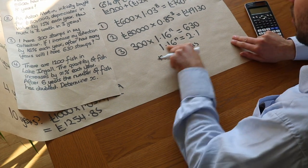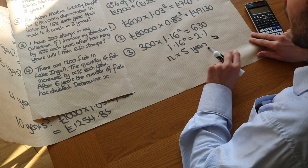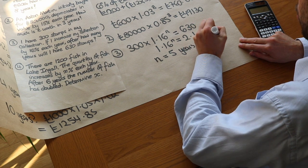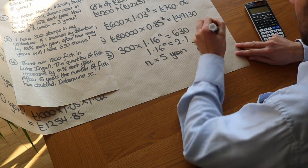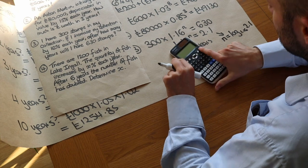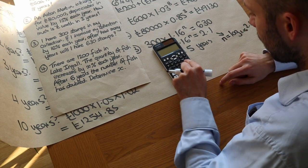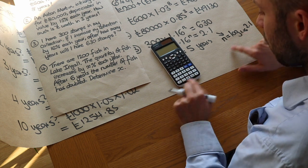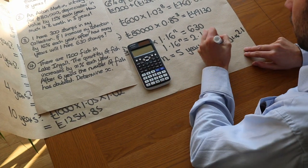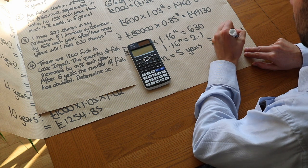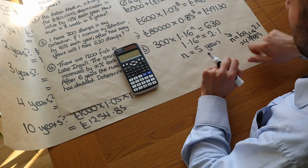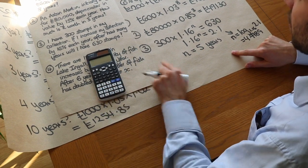Just for your interest — you won't be expected to do this at GCSE — at A-level you'll learn about logs. You can write n as log base 1.16 of 2.1. Using the log button on your calculator with base 1.16 and argument 2.1 gives 4.9989, which is just about five. That gives the exact value of n without trial and error, but you would not be expected to do this at GCSE.